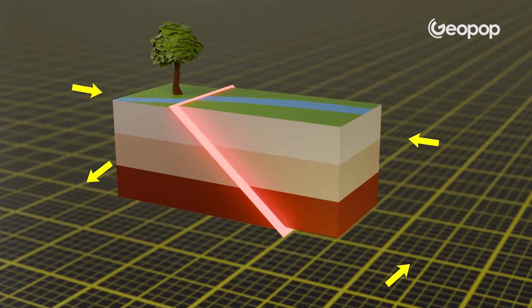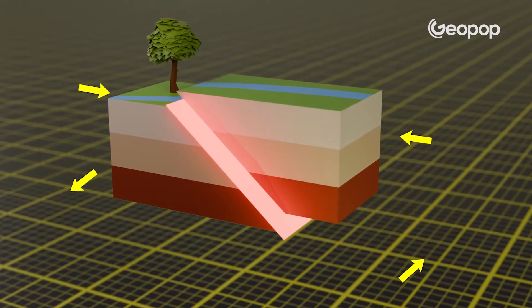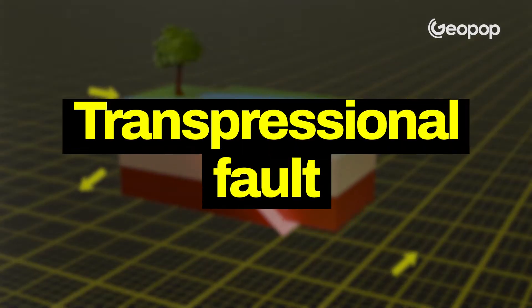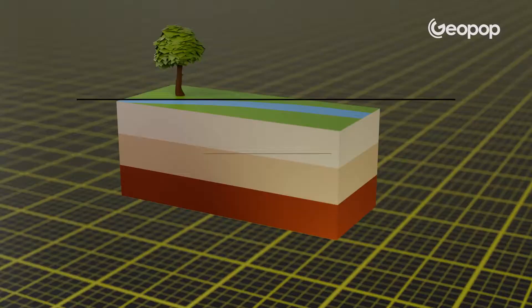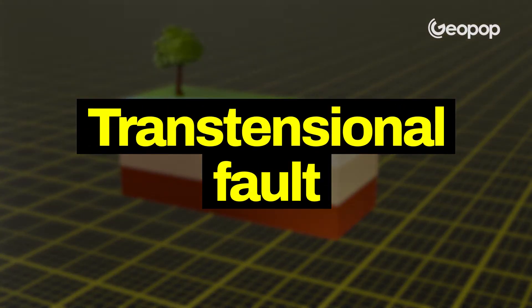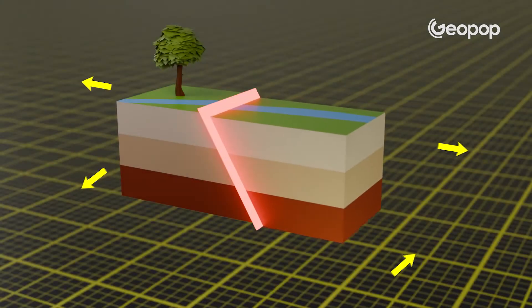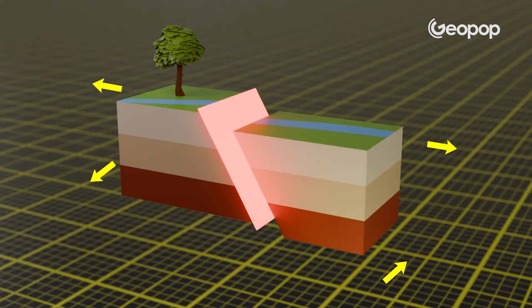If we have a reverse fault with a degree of strike-slip — a bit of sideways movement — we get what's known as a transpressional fault. The term transpressional comes from 'trans,' meaning sideways movement, and 'pressional' from compressional. On the other hand, we talk about a fault being transtensional if there's a sideways component combined with an extensional component. This is first-year university structural geology.